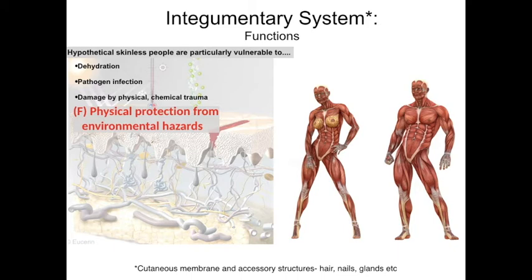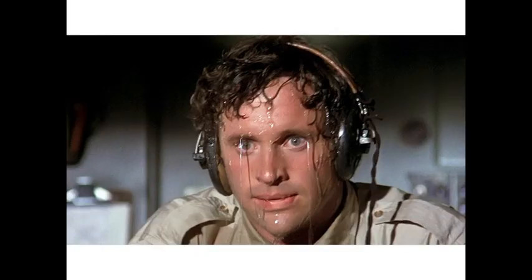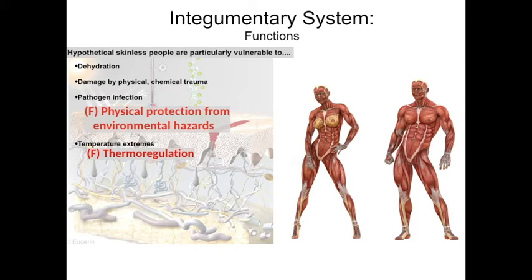The second most important function becomes clear when those skinless people experience temperatures below body temperature or when it gets too hot. Your skin helps guard against temperature extremes and has mechanisms to maintain body temperature. Thermoregulation is also aided by the layer of insulation provided by the subcutaneous layer of the hypodermis, although that's not technically part of the integumentary system.